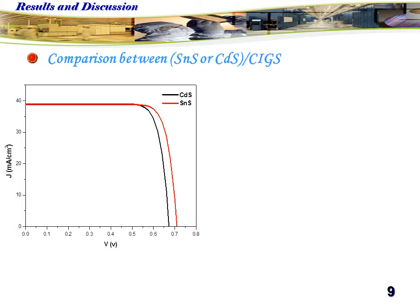The first figure represents the I-V characteristic of the two structures. As seen, structure with tin sulfide is better than structure with cadmium sulfide.